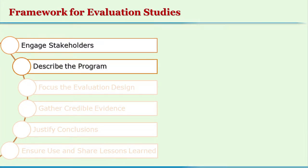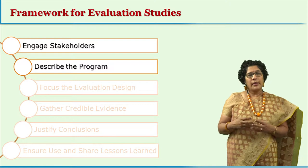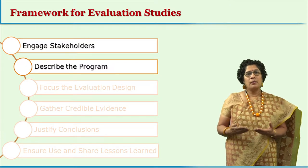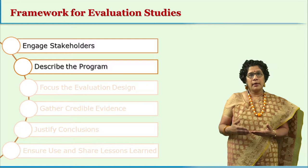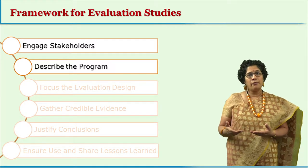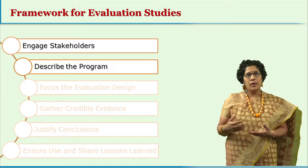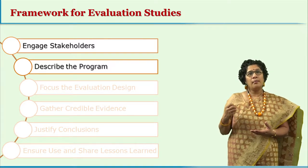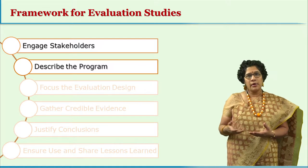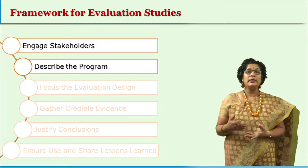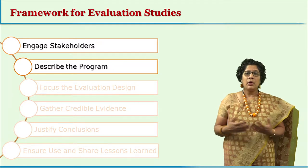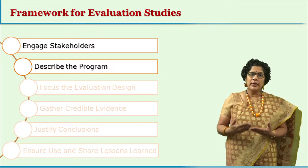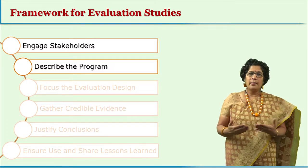The second step is describing the program — exactly what the program is at present, how it is being conducted, what are the salient features of this program, what are some unique characteristics, what are some unique learning experiences given to students, and so on. All of that is described in detail as a background.